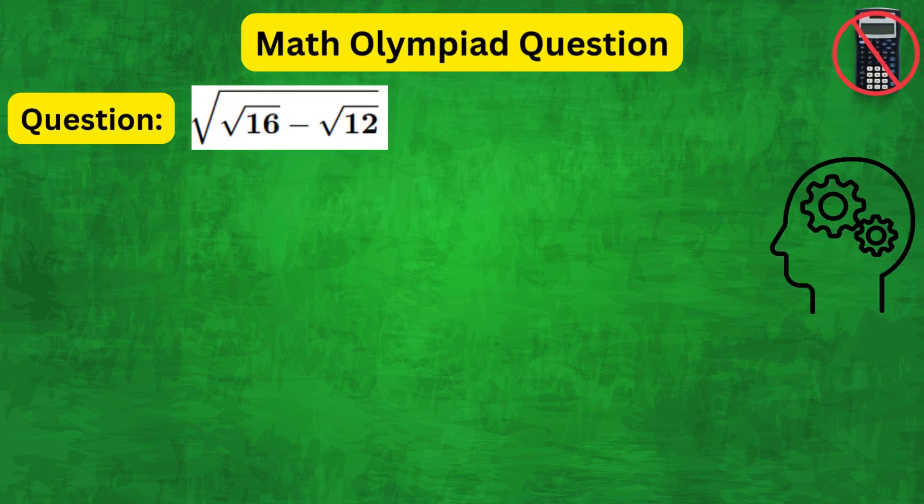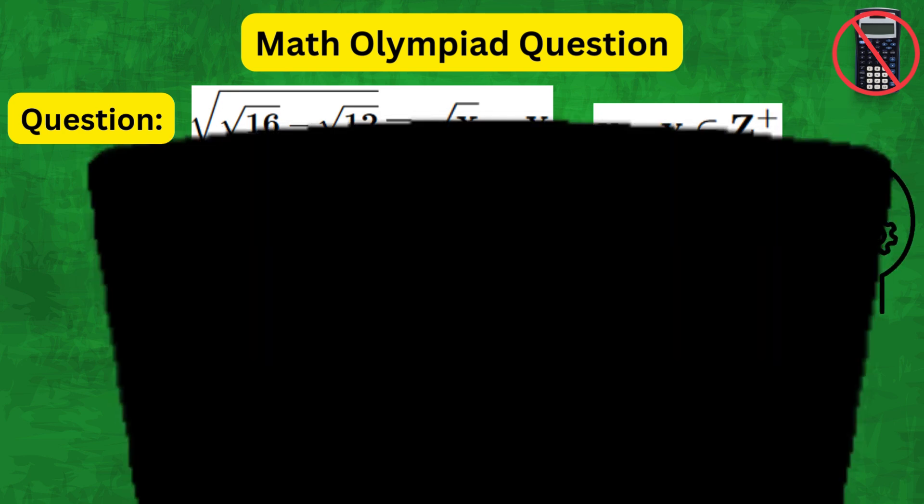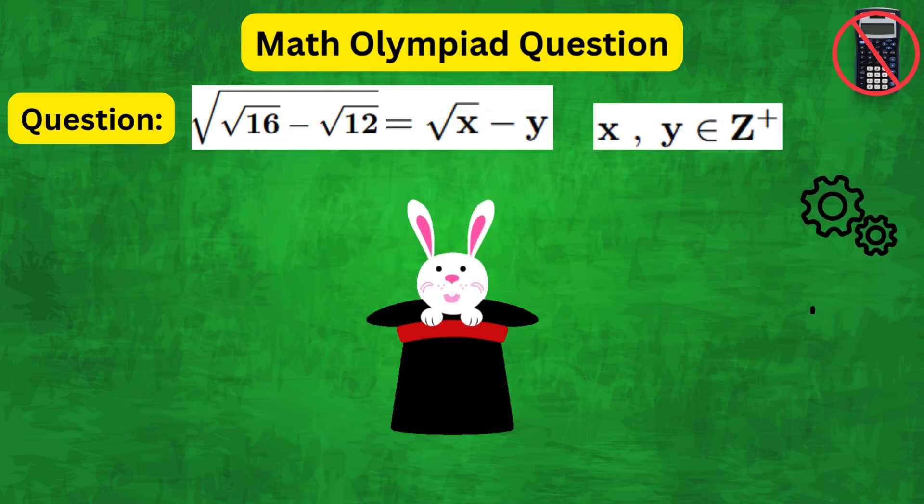Today we're looking at this tricky problem. We want to rewrite square root of root 16 minus root 12 in the form root x minus y, where x and y are positive integers. This will require a special trick as we shall see later in the video.